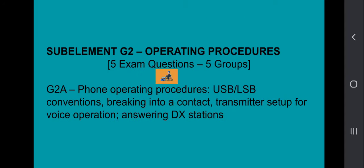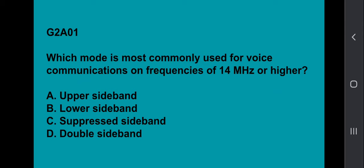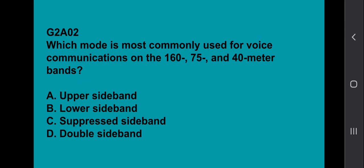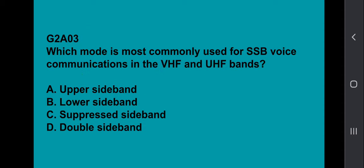Sub-element G2 is operating procedures. Five exam questions come from the five groups. First up, G2A, phone operating procedures — upper sideband, lower sideband conventions. G2A01: Which mode is commonly used for voice communications on frequencies of 14 MHz or higher? Answer is upper sideband. G2A02: Which mode is commonly used for voice communications on the 160, 75, and 40 meter bands? It's going to be lower sideband. G2A03: Which mode is commonly used for single sideband voice communications in the VHF and UHF bands? Upper sideband.